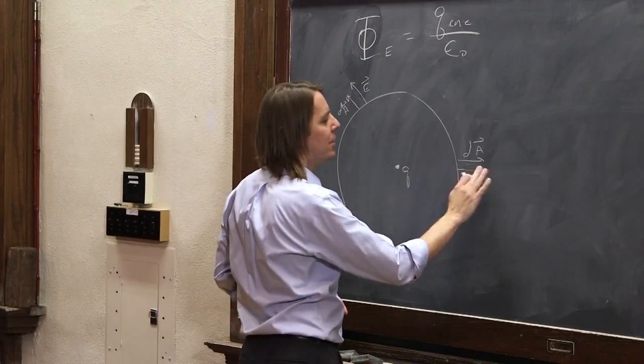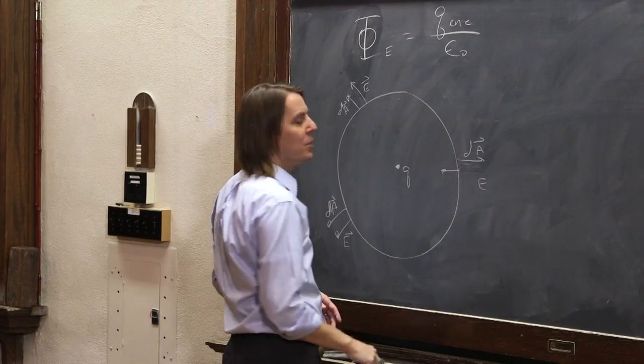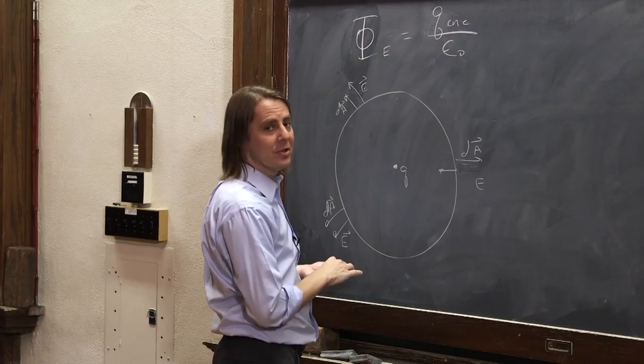If Q were negative, what would happen? Well, we know from Coulomb's law, the E's would go in. Again, the flux would be negative. Everything makes sense.